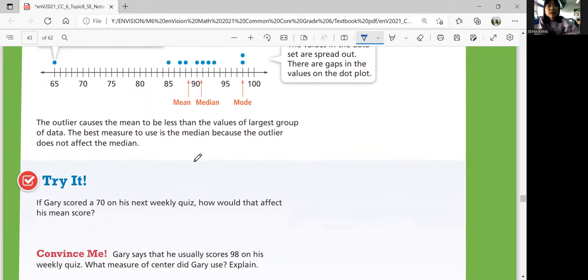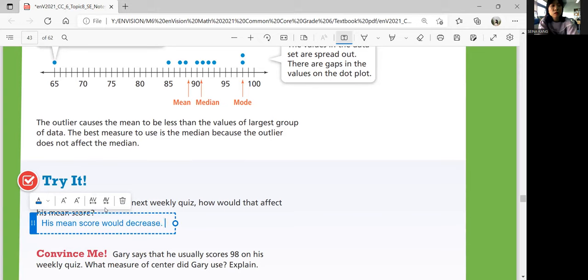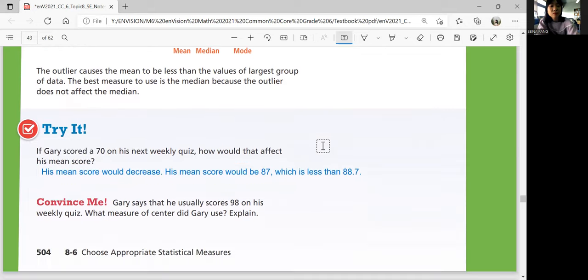So let's look and try it. If Gary scored a 70 on his next weekly quiz, how would that affect his mean score? So if he got 70 on the next one, how would the mean change? Definitely lower because 70 is way lower than the mean he has right now. So his mean score would decrease. His mean score would be 87, which is less than 87 from the original mean that we have.